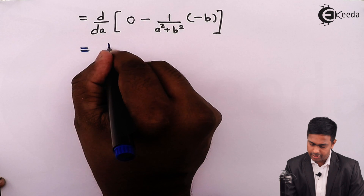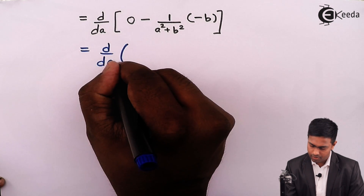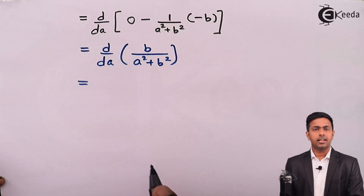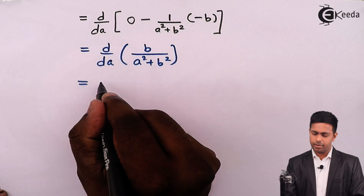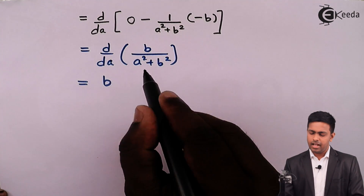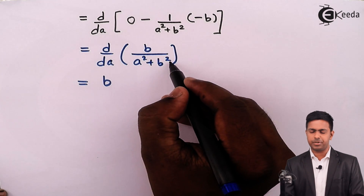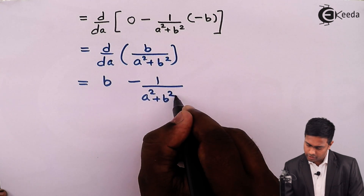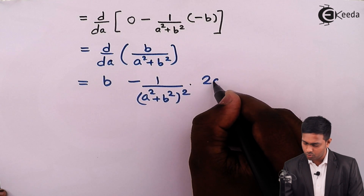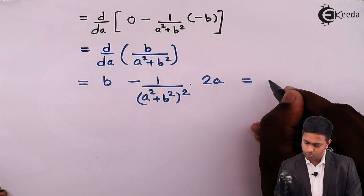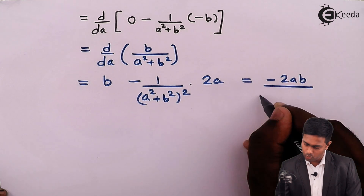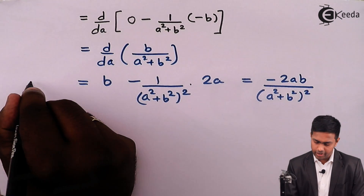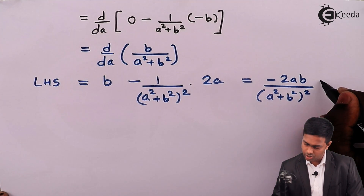Taking B outside since we are differentiating with respect to A, the differentiation of 1 upon A squared plus B squared with respect to A is minus 1 upon (A squared plus B squared) squared times 2A, which is equivalent to minus 2AB upon (A squared plus B squared) squared. This is the value of LHS, and we call it equation number 2.